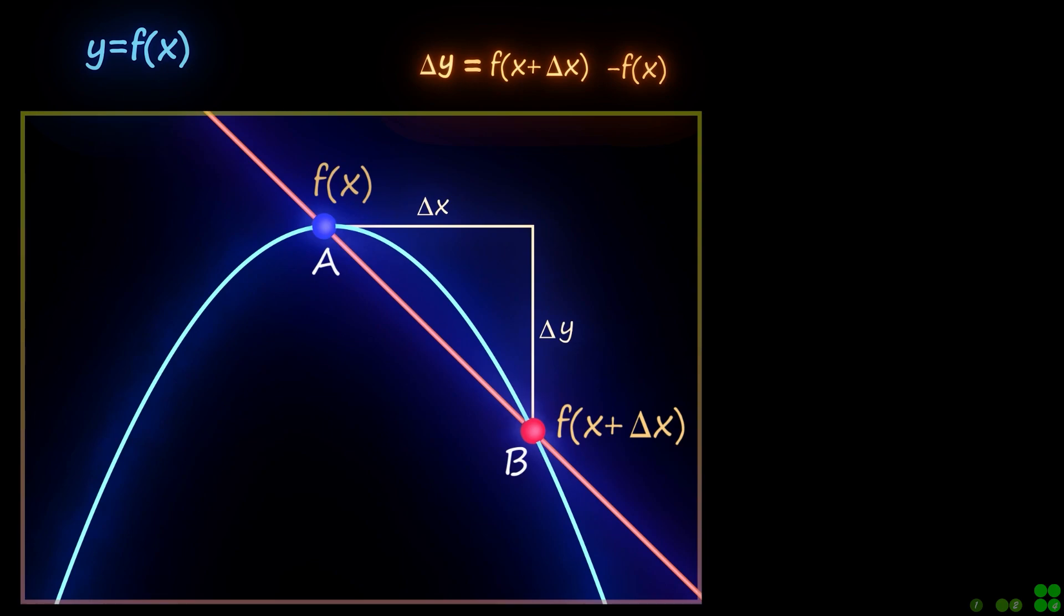The slope of this secant line is given by delta y over delta x, as shown.